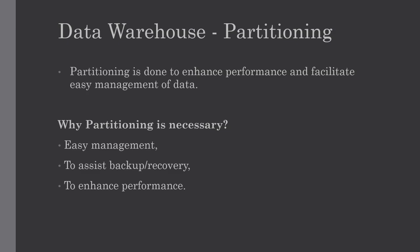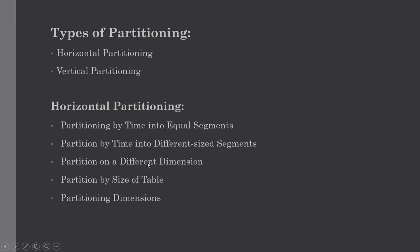There are two major types of partitioning: horizontal partitioning and vertical partitioning. Starting with horizontal partitioning — there are various ways in which a fact table can be partitioned horizontally. We have to keep in mind the requirement for manageability of the data warehouse. There are several types to cover in horizontal partitioning.